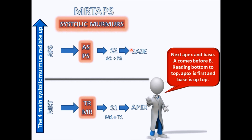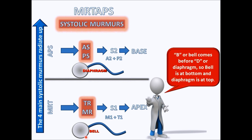The next thing they may ask is where you use the bell versus the diaphragm of your stethoscope. B for bell comes before D for diaphragm, so the bell is used at the apex and the diaphragm is used at the base. When listening to the aortic and pulmonic valves we primarily use the diaphragm, and for the mitral and tricuspid we primarily use the bell.